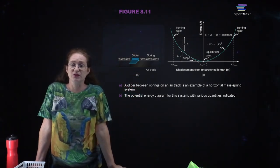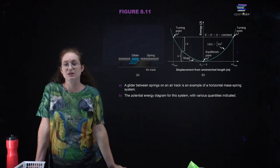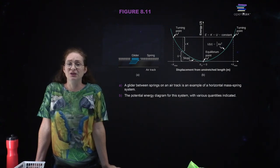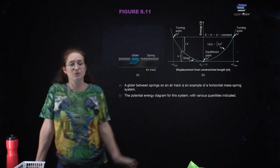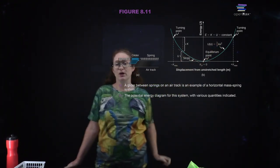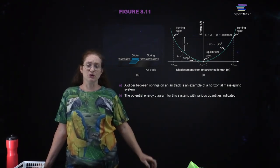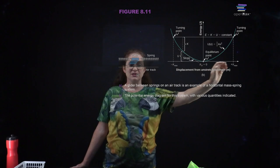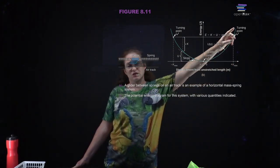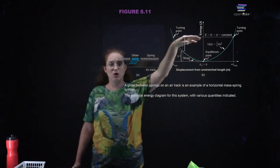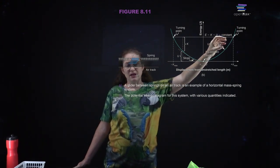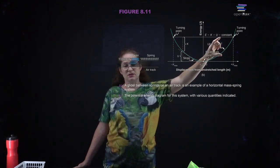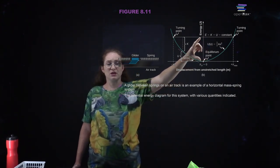You also have potential energy due to springs. A common intro physics experiment is a glider on an air track connected to both sides by springs. The potential energy for a spring is one-half kx squared. You can draw a potential energy diagram — on the y-axis is energy, on the x-axis is displacement. For any given total energy, the kinetic energy is the distance between the total energy line and the potential energy curve.